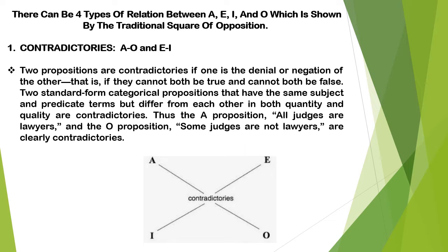Now A and O, E and I — these two pairs of propositions are described as contradictories. When are propositions contradictory? They are said to be contradictories if one is the denial of the other, that is, they cannot both be true and they cannot both be false — which means if one is true, the other has to be false. So two standard form categorical propositions having the same subject and predicate terms, but differing from each other both in quantity and in quality, are contradictories.